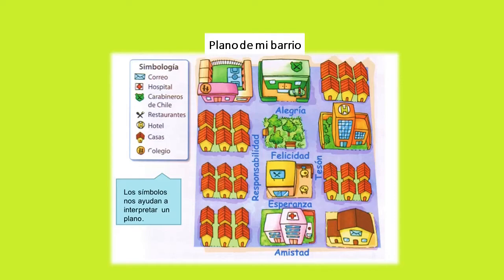¿La encontraste? Sí. Está en la parte de abajo, en el centro. Es un edificio blanco y en la parte superior del dibujo está la cruz roja. Y si te fijas en la simbología, es el mismo símbolo que encuentras en la simbología del hospital. ¿Ves que para esto nos sirve la simbología de los planos? Para encontrar lo que buscamos en los diferentes planos.